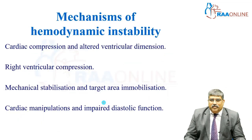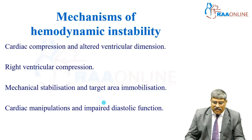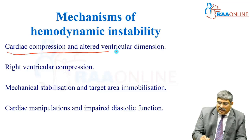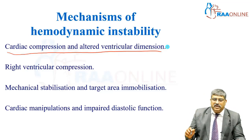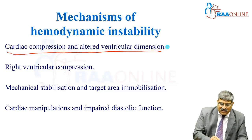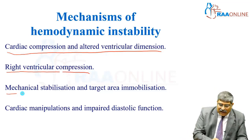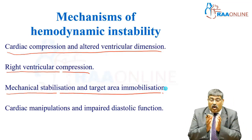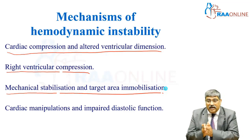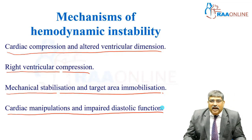What are the various mechanisms by which hemodynamics is affected? The first and foremost is cardiac compression and arterial ventricular dimension caused by the octopus and the starfish suction apparatus. Right ventricular compression, which is very important during obtuse marginal grafting, mechanical stabilization and target area immobilization, which can alter left ventricular systolic and diastolic function. Cardiac manipulation and impaired diastolic function can all cause hemodynamic instability.